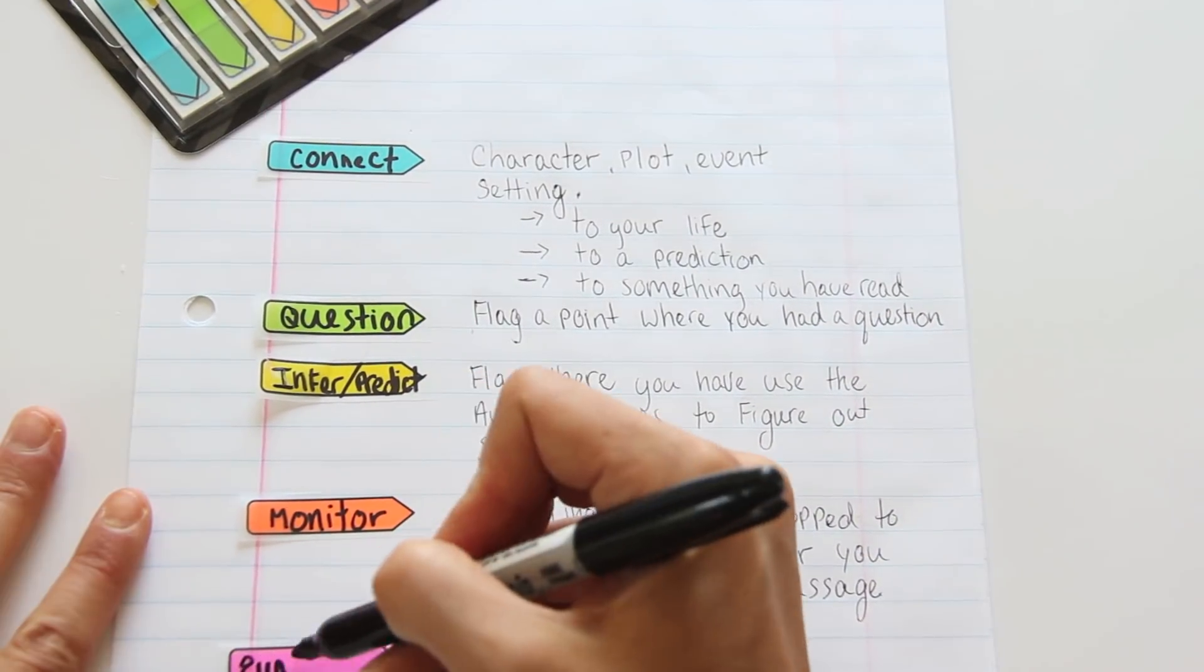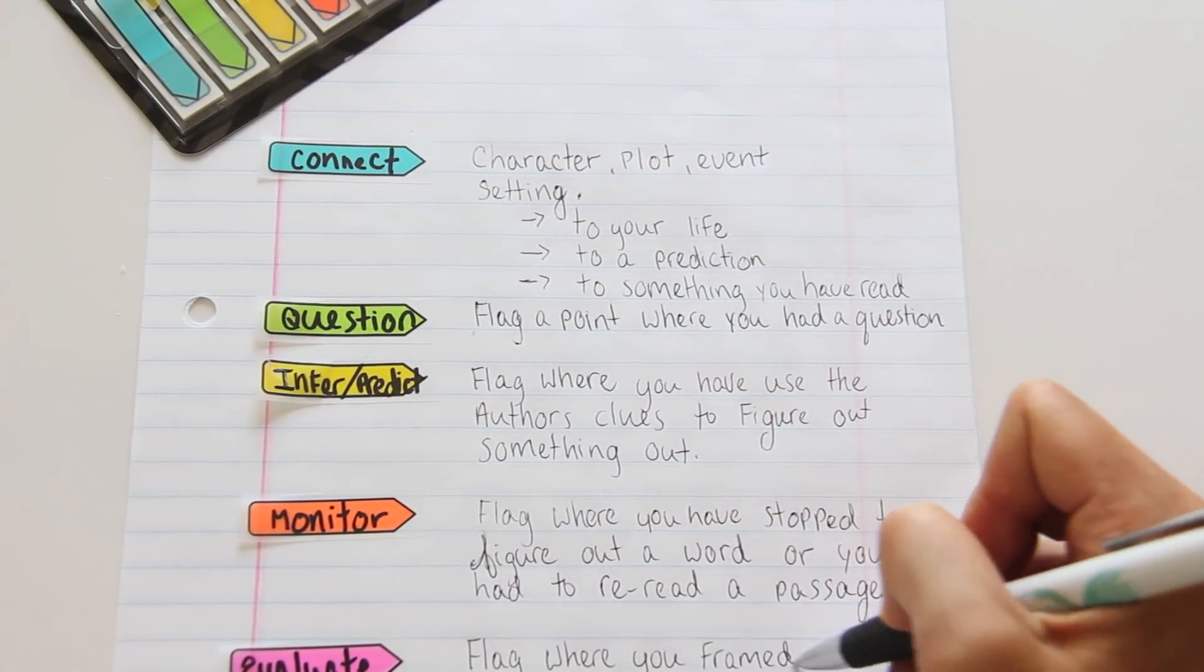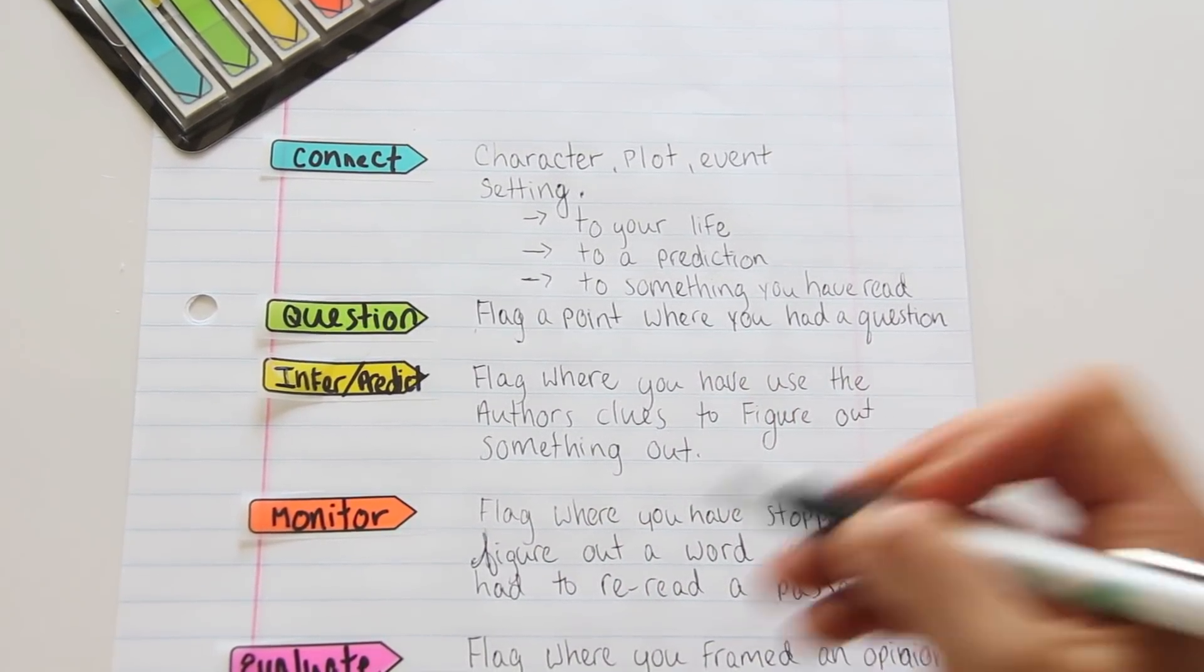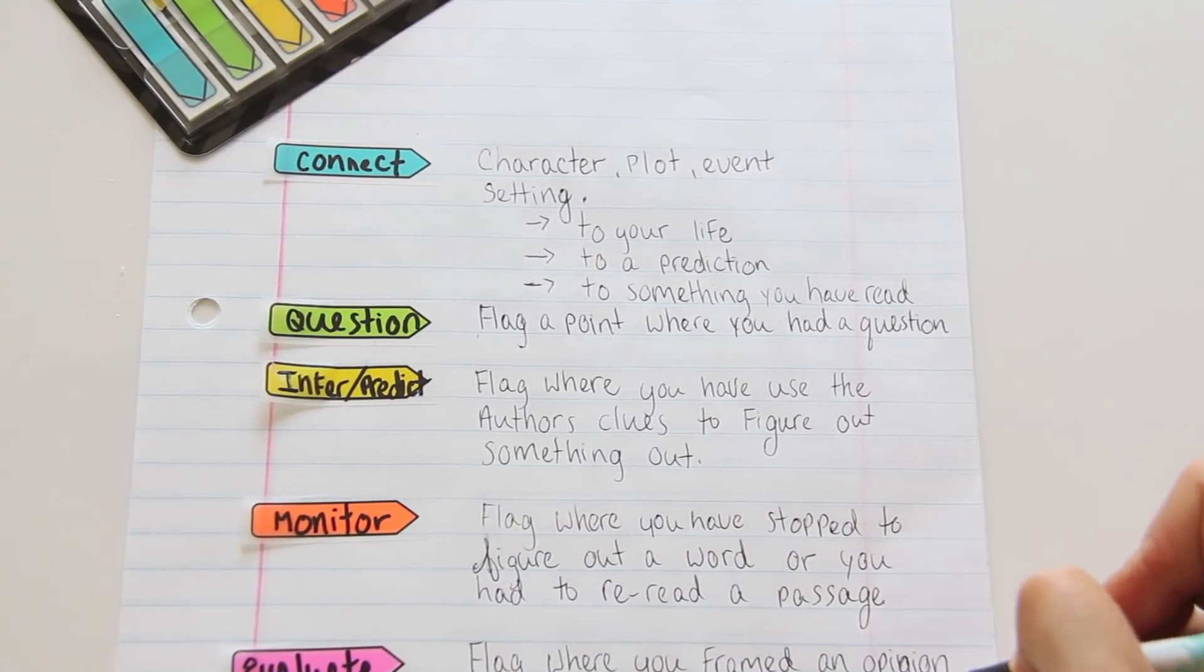Then once you're done reading, you need to evaluate. Flag where you framed an opinion about the story, how you think it's going to change, or maybe the characters change, something you like or dislike. It could just be general thoughts.